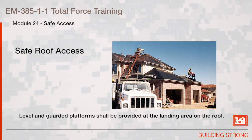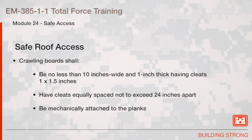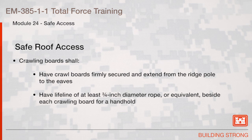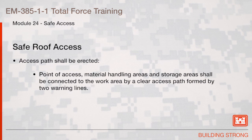Safe roof access: Level and guarded platforms shall be provided at the landing area on the roof. Crawling boards shall not be less than 10 inches wide and 1 inch thick, having cleats of 1 by 1½ inches. Cleats shall be equally spaced, not to exceed 24 inches apart, and mechanically attached to the planks. Crawl boards shall be firmly secured and extend from the ridge pole to the eaves. A lifeline of at least 3¼ inch diameter rope shall be provided beside each crawling board as a handhold. Access paths shall be erected connecting the point of access, material handling areas, and storage areas to the work area by two warning lines.